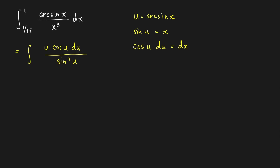The limits of integration will be arcsin(1/√2), which equals π/4, and arcsin(1), which equals π/2. Now we can write the integral from π/4 to π/2. This is just equal to u times cosine(u)/sine(u), which is actually cotangent(u), and then the remaining 1/sin²(u) in the denominator, which we can write as cosecant²(u).